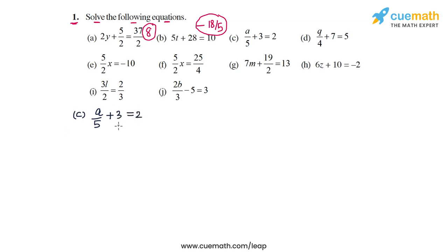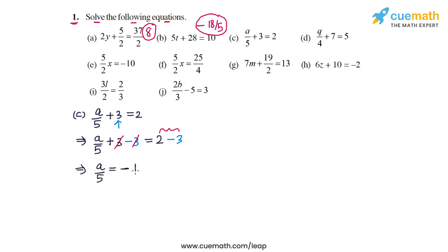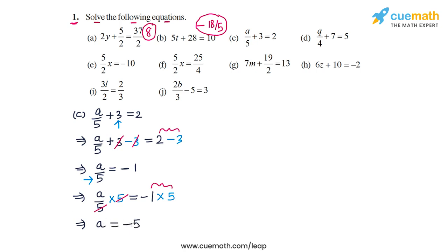In part c, the equation is a by 5 plus 3 is equal to 2. As the first step we subtract 3 from both sides: these terms cancel out and on the RHS we have 2 minus 3, which is minus 1. So we get a by 5 equals minus 1. Next, we multiply both sides by 5 to separate out a. The 5s cancel out and on the RHS minus 1 times 5 becomes minus 5. So the solution in part c is a is equal to minus 5.